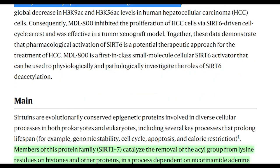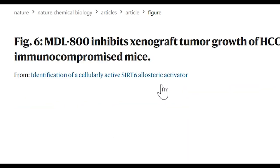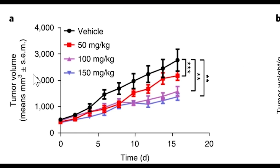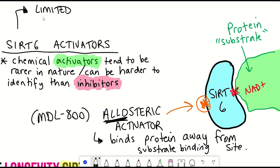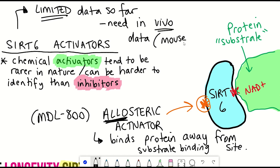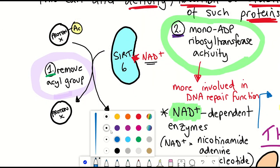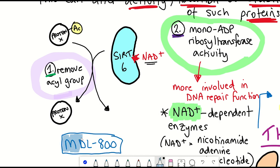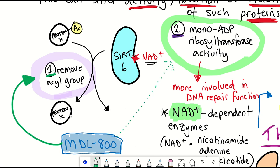Interestingly, this study actually has some in vivo data in mice, whereby injection of MDL800 reduced tumor growth in a xenograft model, whereas all other proposed Sirtuin 6 activators so far have only been examined in vitro. Furthermore, no Sirtuin 6 activator so far has been shown to have any connection with lifespan or healthspan extension. Going back to the deacetylation versus mono-ADP ribosylation distinction, MDL800 seems to only activate the deacetylation activity, not the ADP ribosylation activity. Based on work from other studies showing that ADP ribosylation activity might be more important for DNA repair, it would therefore be interesting to find compounds that might preferentially activate this ADP ribosylation activity.